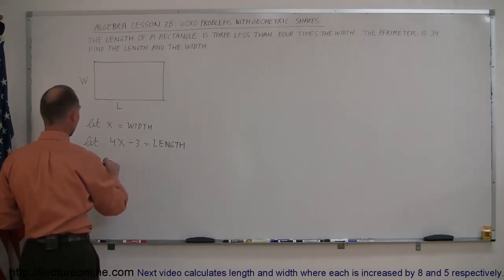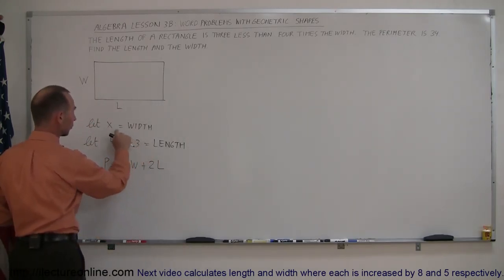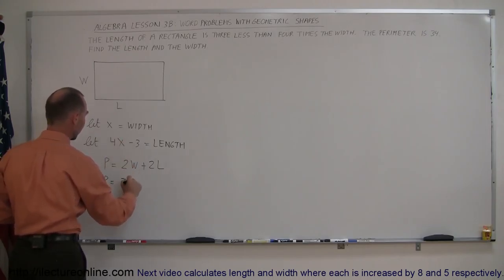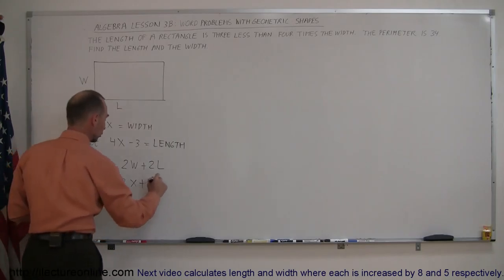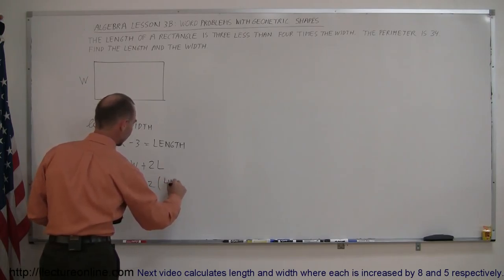So we can say that the perimeter, which is defined as twice the width plus twice the length. Now we plug in what the width and the length are equal to in terms of x. So perimeter is equal to 2 times the width, which is x, plus 2 times the length, which is 4x minus 3.